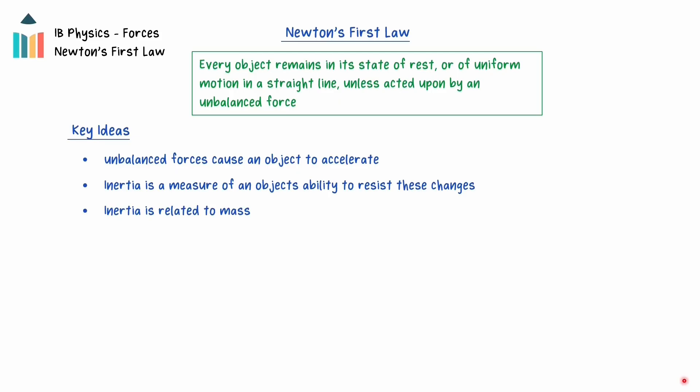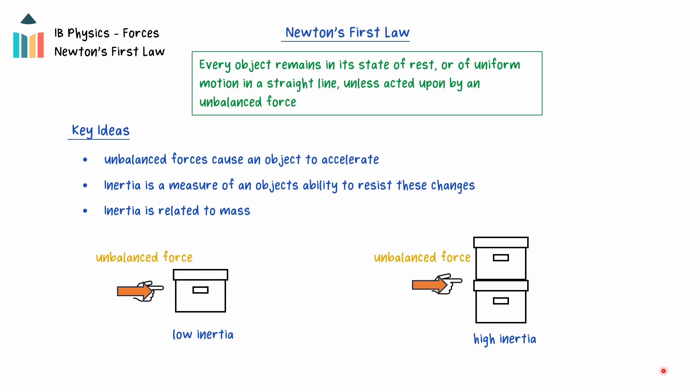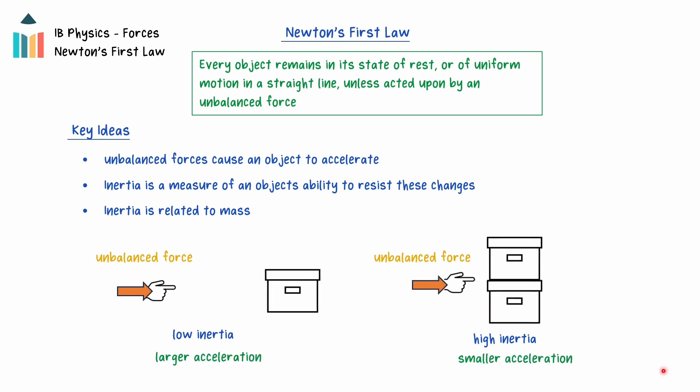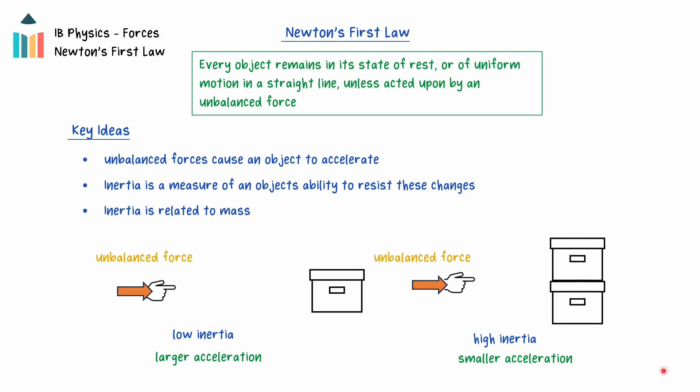An object's mass determines its inertia, and it relates to this ability to resist being accelerated. For example, if an unbalanced force acts on an object with a low inertia or a low mass, it will accelerate, but if the same magnitude force acts on an object with a large inertia or mass, its acceleration will be much smaller due to its larger inertia.